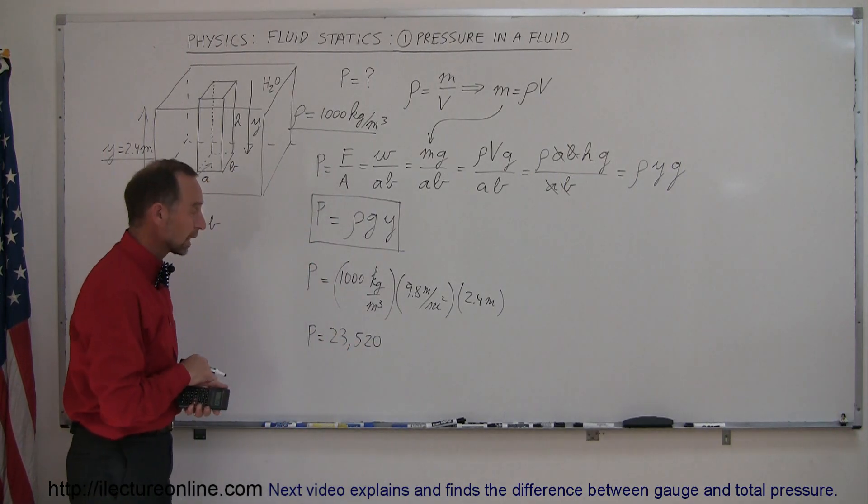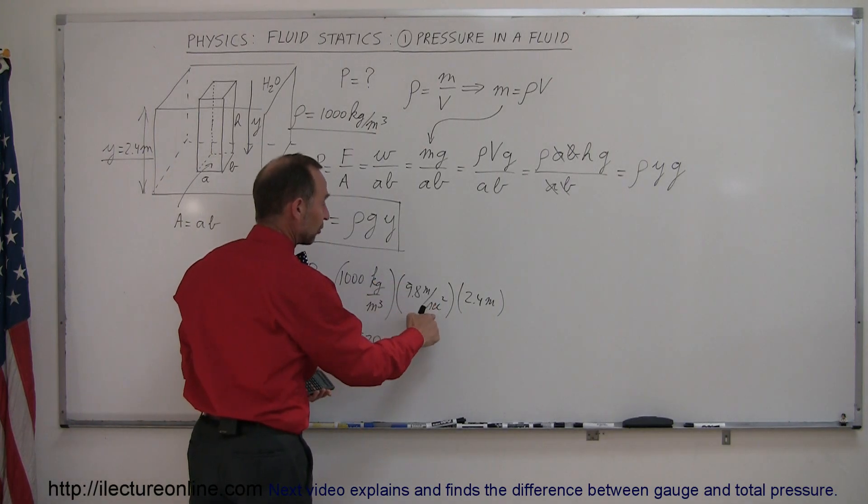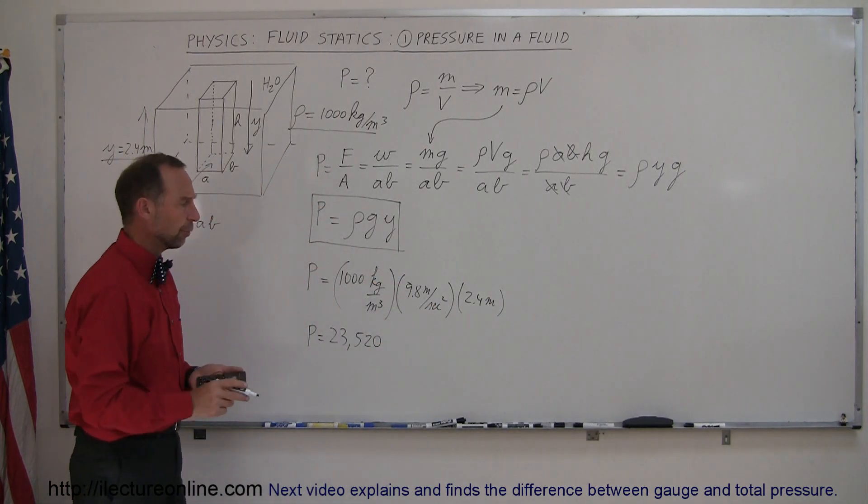1,000 times 9.8 times 2.4, and we get 23,520. Now, what are the units? Well, kilograms meters per second squared, that's the units of force. That's newtons.